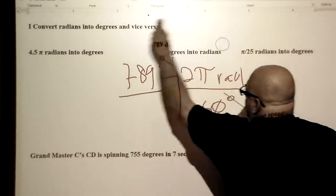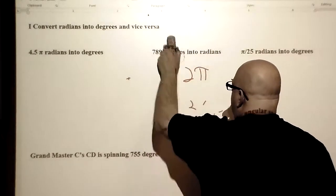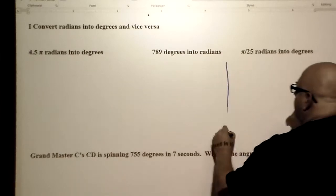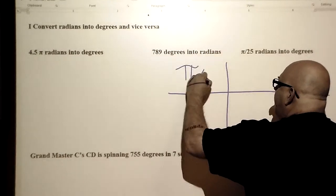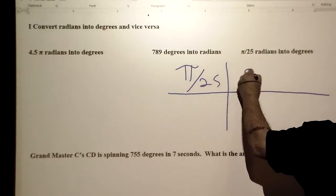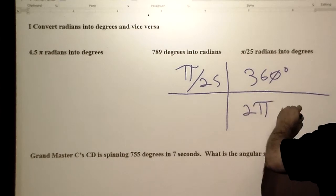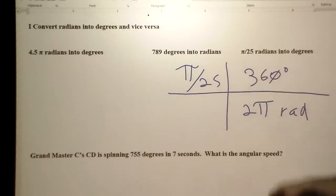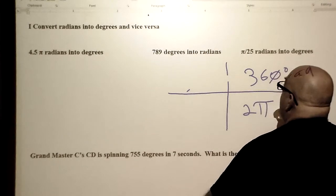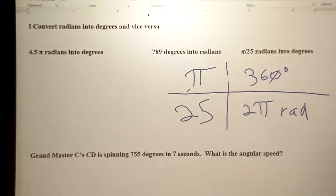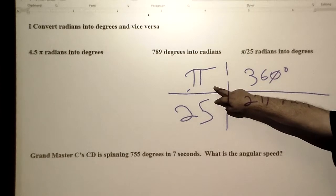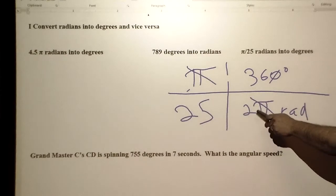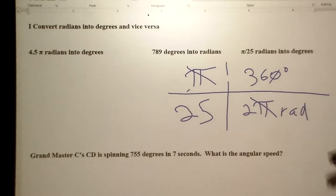For the last conversion, we have pi over 25 radians to change into degrees. How do we set that up in bridge notation? Some people might think you write it one way and then multiply by 360 degrees over 2 pi radians — but when you've got a fraction like this, you need to put in pi over 25 as the fraction and treat it the same way. The pi's cancel out — the 2 doesn't cancel, but the pi's do — and then you multiply straight through to get your answer in degrees.